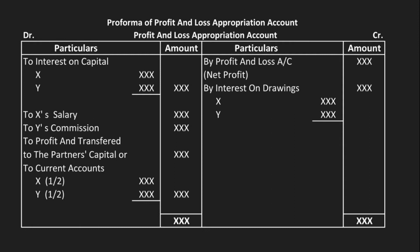The main intention of this account is to make adjustments. You can see items such as interest on drawing, interest on capital, salary, commission, and all such accounts are adjusted here. The profit or loss is then distributed. Profit and Loss Appropriation Account is an extension of the Profit and Loss Account.